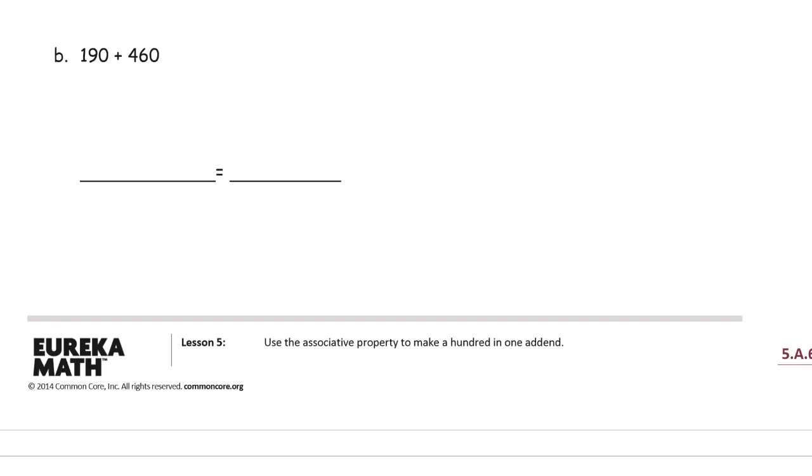So here we're looking at 190. Well, that's really close to 200. So let's make it 200. So think of this 460. We need 10 more to get it up to 200. And what's going to be left is 10 less of 460. That's 450. So it's going to be 200.